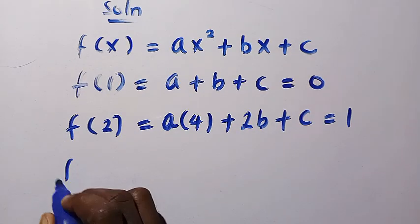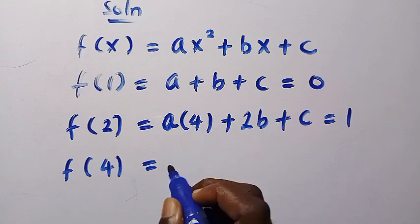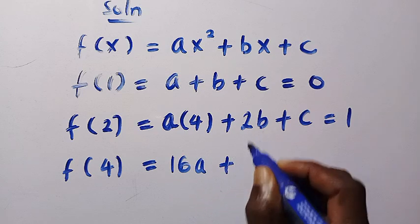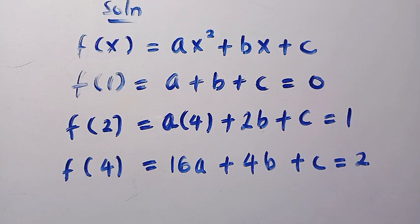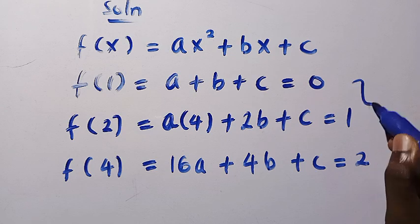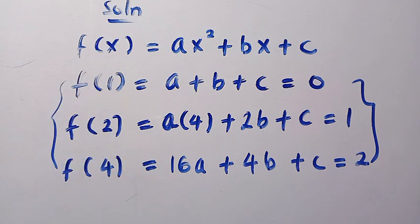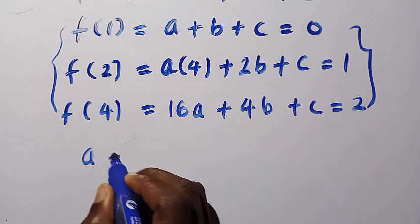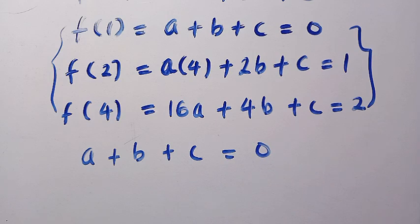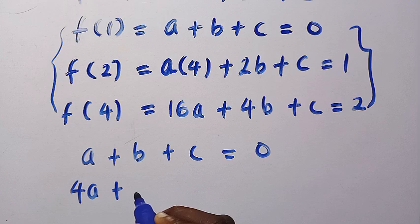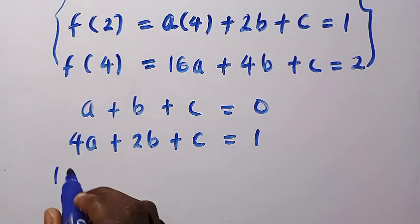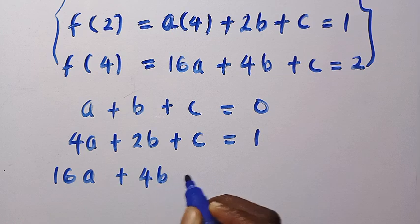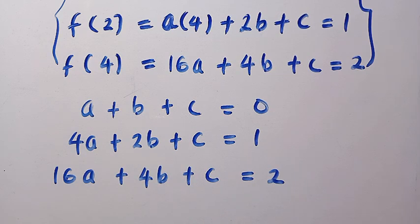The last point we consider is f of 4, which is f of 2 to the power of 2. For f of 4, we have 4 squared which is 16a, plus 4b plus c equals 2. So here are the three equations: equation 1 is a plus b plus c equals 0; equation 2 is 4a plus 2b plus c equals 1; equation 3 is 16a plus 4b plus c equals 2.